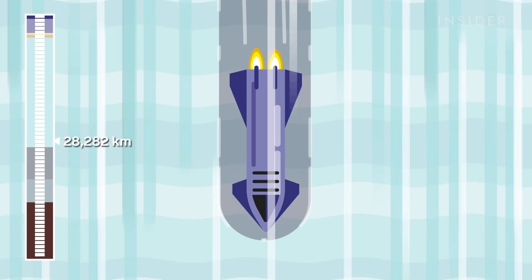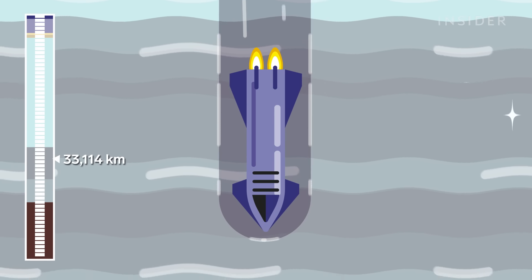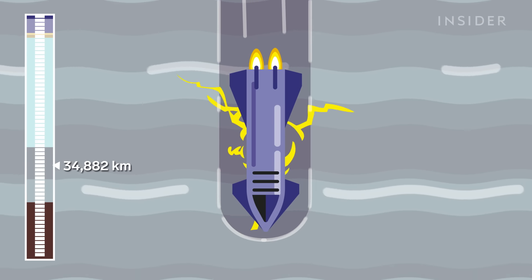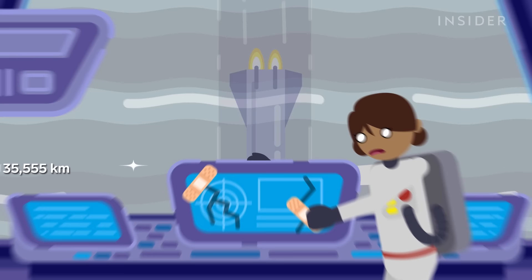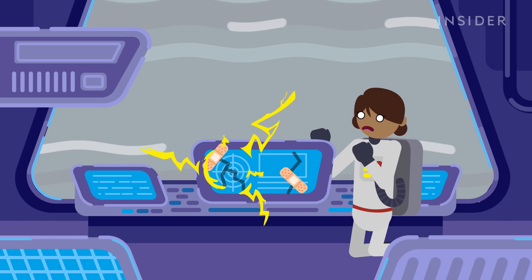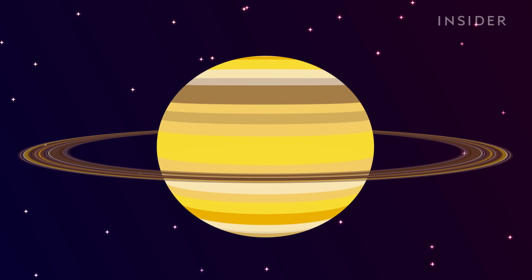And if we somehow survive to reach the next layer, we'll hit yet another obstacle, a layer of liquid metallic hydrogen. The problem here is that this metal can conduct electricity. So even if our navigation equipment and electronics escape the aurora upstairs, it's probably down for the count now.